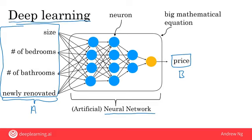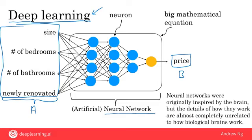Many decades ago this type of software was called a neural network, but in recent years 'deep learning' became a much better-sounding brand, and that's the term that's been taking off. As for what neural networks have to do with the brain — it turns out, almost nothing. Neural networks were originally inspired by the brain, but the details of how they work are almost completely unrelated to how biological brains work, so we should be very cautious about making that analogy.